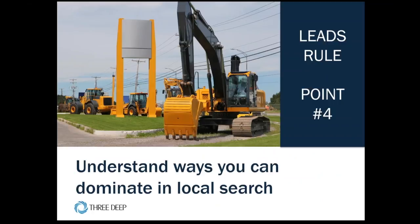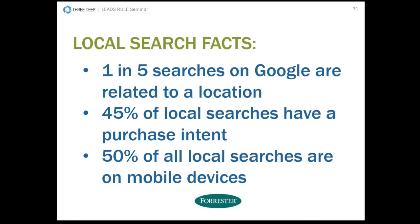Our fourth point is how to dominate local search. For organizations with locations — whether sales, retail, franchisee, or independent dealer — it's important to be found in your local geography. One in five Google searches are related to a location, and 45% of those have local intent. If someone types 'siding contractor in St. Paul,' they're not doing it for fun — there's purchase intent associated with it. You need to make sure you show up with a local presence.